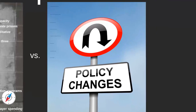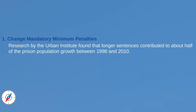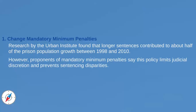Here is a brief summary of the policies Congress could change to reduce the federal prison population — we urge you to go to the report for more details. First, Congress could repeal all or some of the mandatory minimum penalties of five years or more. Research by the Erdman Institute found that longer sentences contributed to about half the prison population growth between 1998 and 2010. However, proponents of mandatory minimum penalties say this policy limits judicial discretion and prevents sentencing disparities.